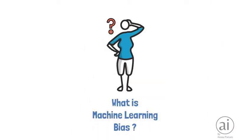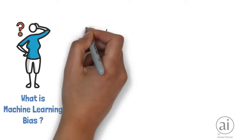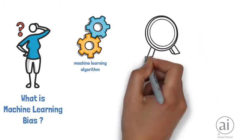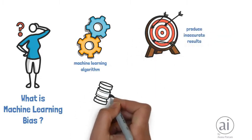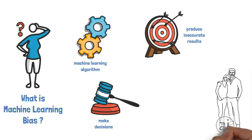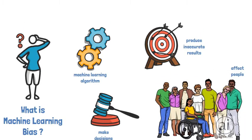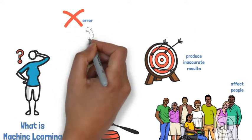Machine learning bias is the tendency of a machine learning algorithm to produce inaccurate results, particularly when used to make decisions that affect people. In other words, it's an error made by a machine learning algorithm where learned behavior is incorrect or undesirable.